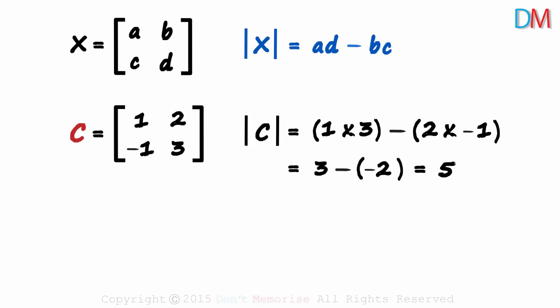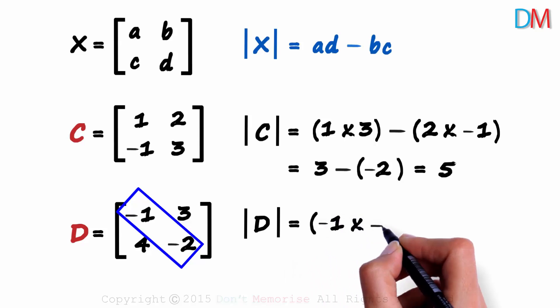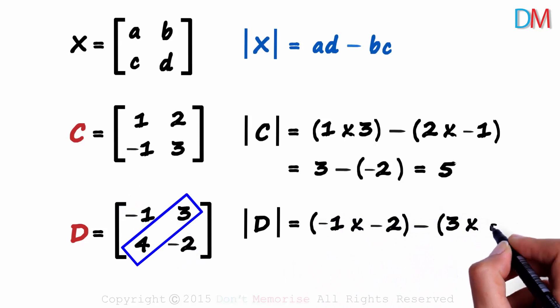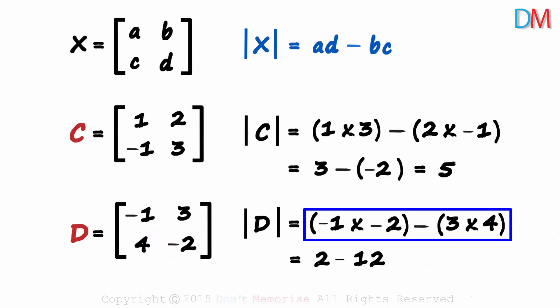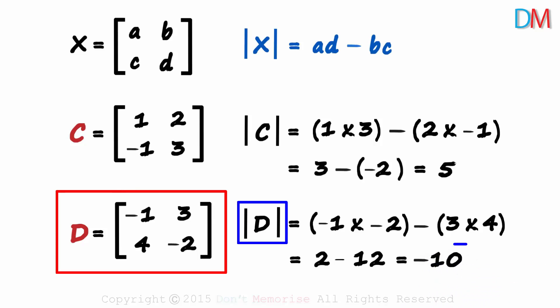Now I want you to try out the next problem. What is the determinant of matrix D? Pause the video and find the determinant. This product is minus 1 times minus 2, and from this we subtract the product of 3 and 4. This will equal 2 minus 12, which gives us minus 10. The determinant of matrix D is minus 10.